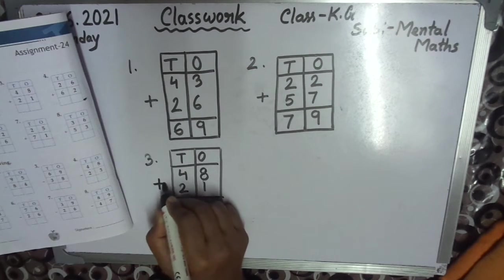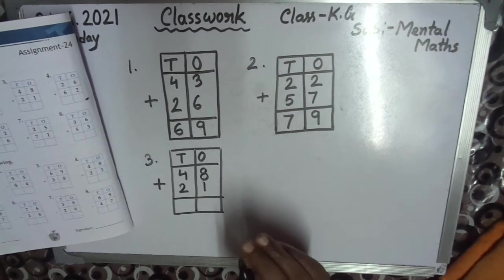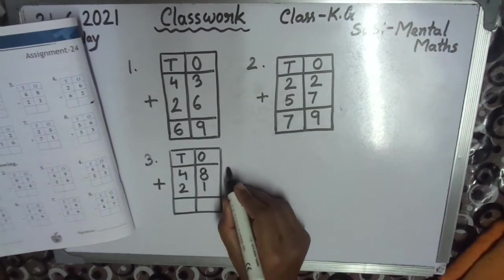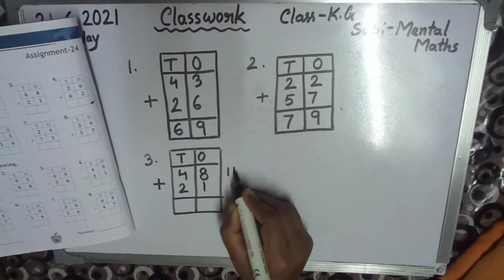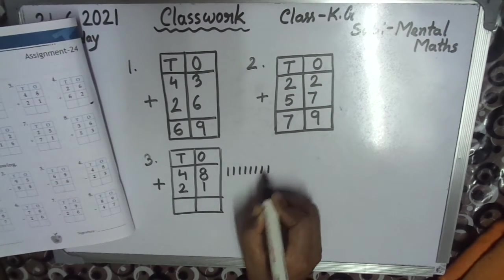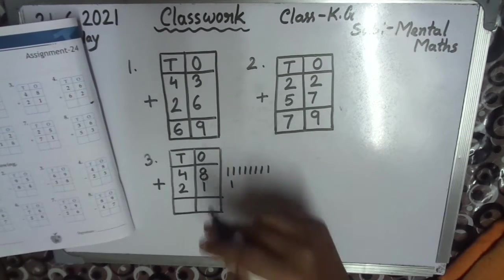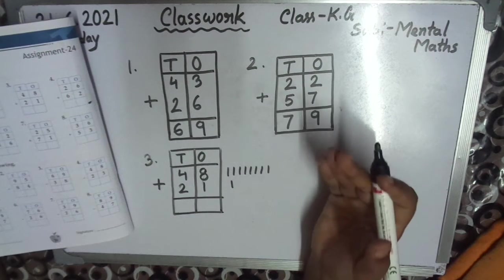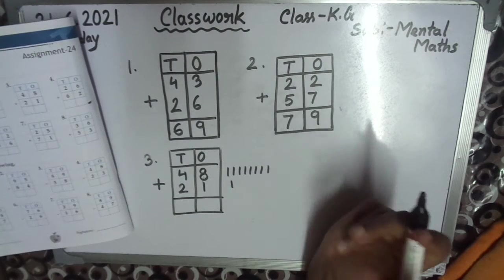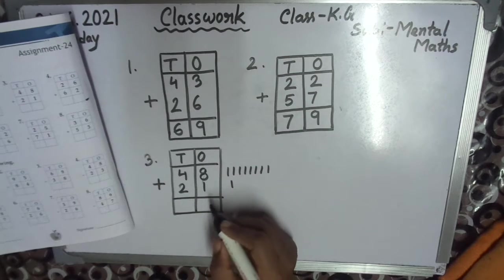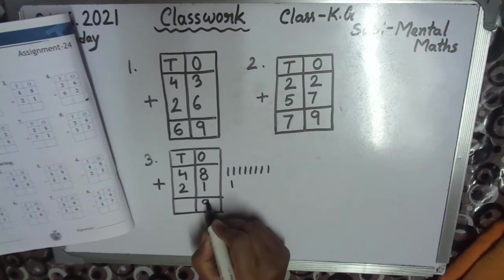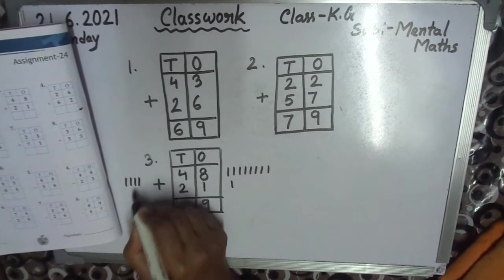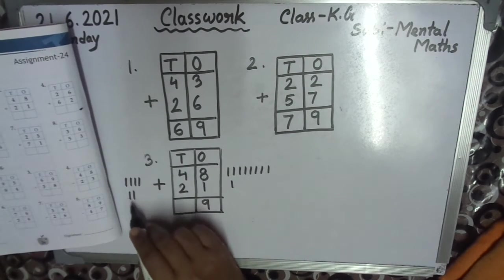Sign, plus means addition. So count 8. Draw the lines: 1, 2, 3, 4, 5, 6, 7, 8. 1, you know children, 8 plus 1 means 9. After number you know, 8 plus 1 means 9. 4 plus 2. Draw the lines 4, 5, 6.